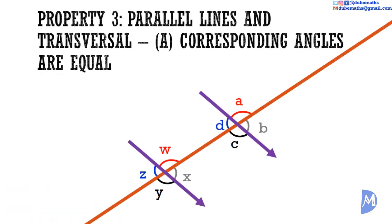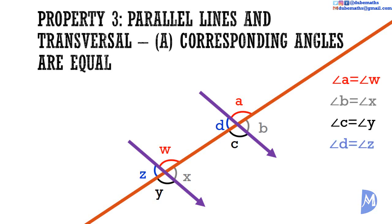Parallel lines and transversals. When two parallel lines are cut by a transversal, the corresponding angles are equal. In this diagram, the corresponding angles are color coded. We are saying that angle A equals angle W, angle B equals angle X, angle C equals angle Y, and angle D equals angle Z.